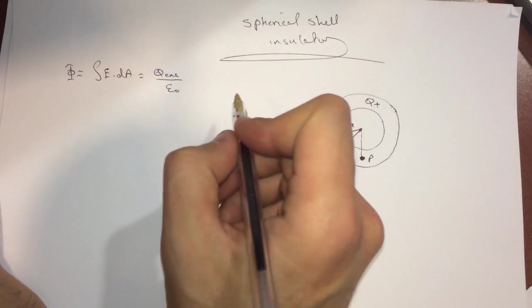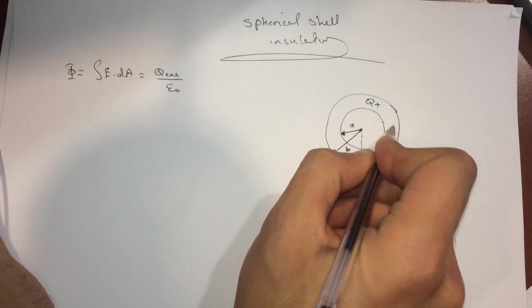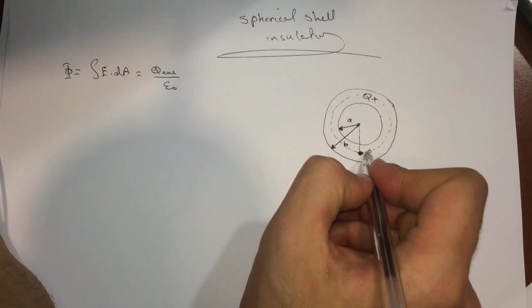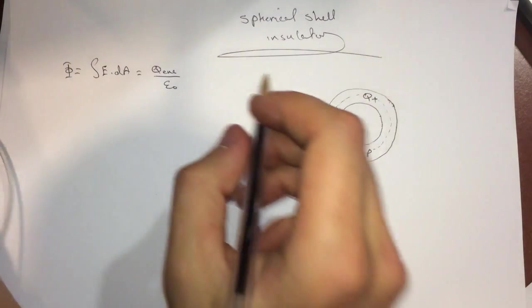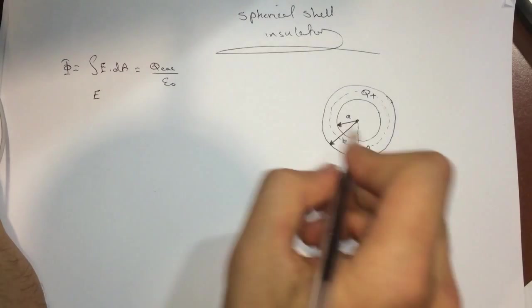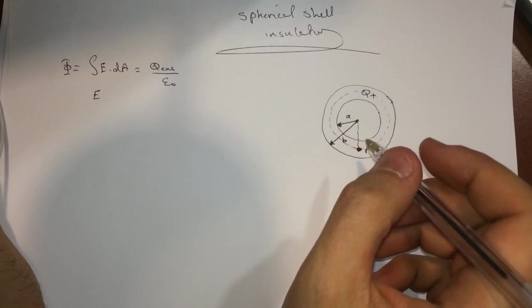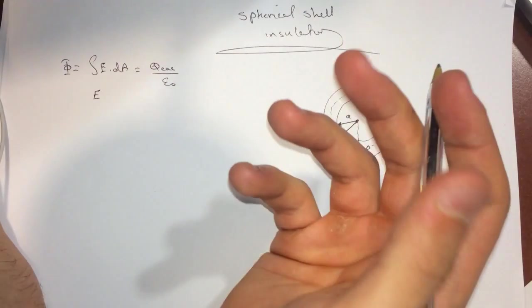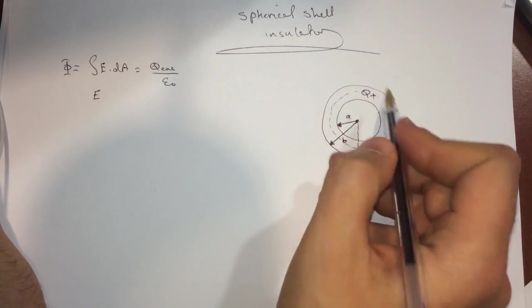Our Gaussian surface will be this here because the electric field is always the same around this sphere, the Gaussian surface. So E is constant. The dot will go away because it's going to be in the same direction, so the cosine of theta will be zero.